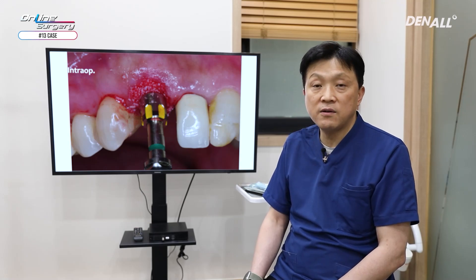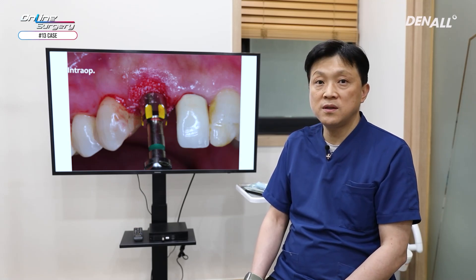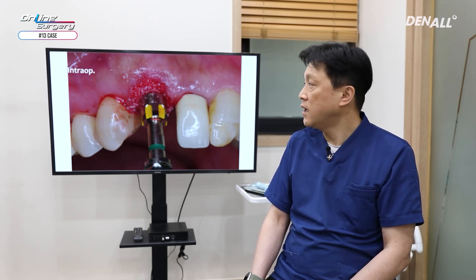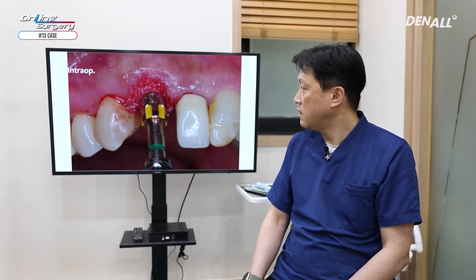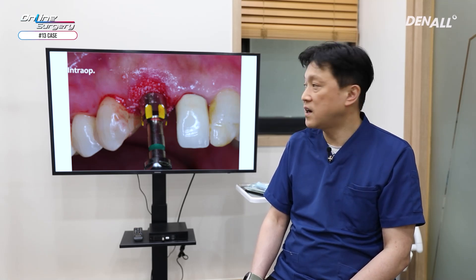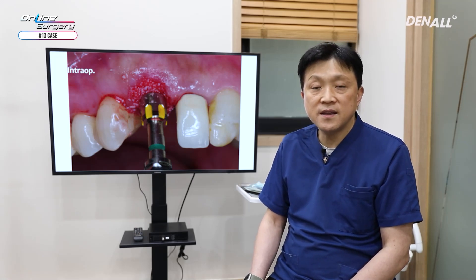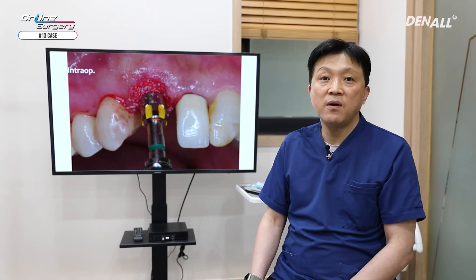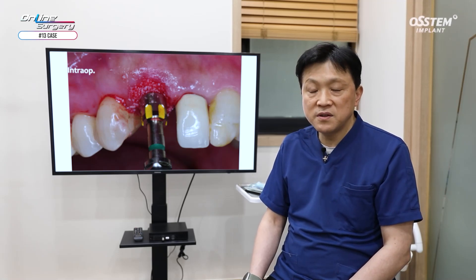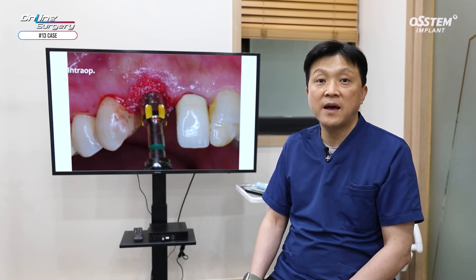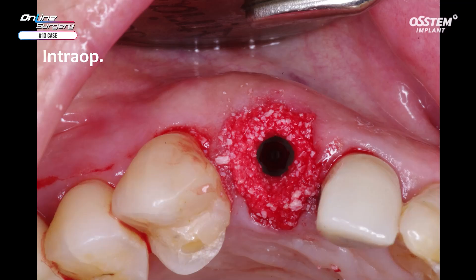When performing a dual zone graft, placing a healing abutment first can cause difficulties in introducing graft material due to its wide diameter. Therefore, with the implant driver still on, the bone graft material was placed. When using AOS collagen, the collagen graft material has self-aggregation properties, which prevents scattering of the graft material. After removal of the implant driver, graft was done up to the gingival area.